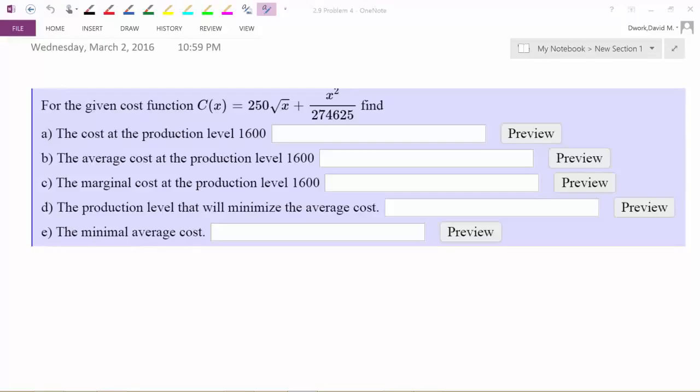For this problem I want you to realize that it's saying, for the given cost function, so what we're going to assume is C stands for cost, and what we always make the assumption when we're dealing with cost functions if they don't mention it, is that X is the production level.